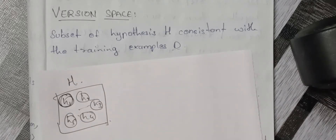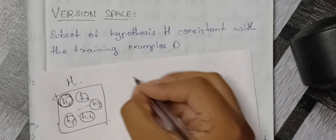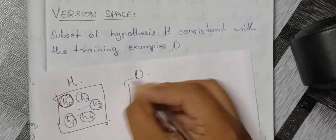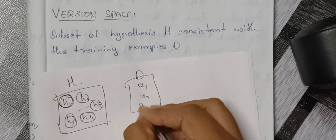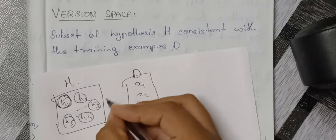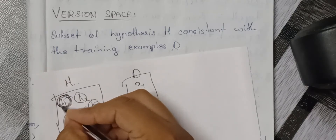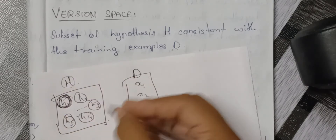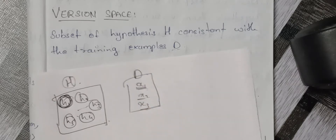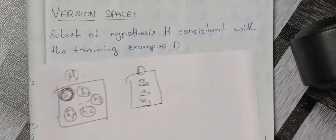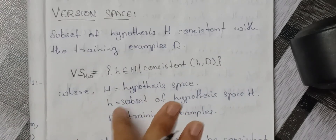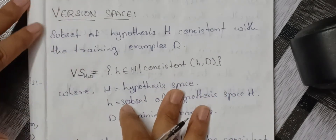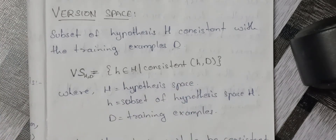Training examples D contain instances such as X1, X2, X3, and so on. The subset of hypothesis H should be consistent with all these training examples. If it is consistent, then the condition of version space is said to be satisfied.